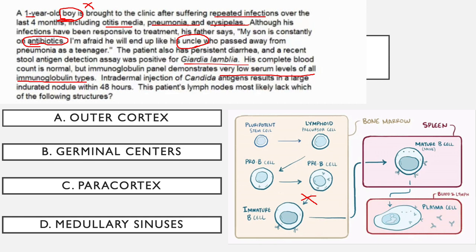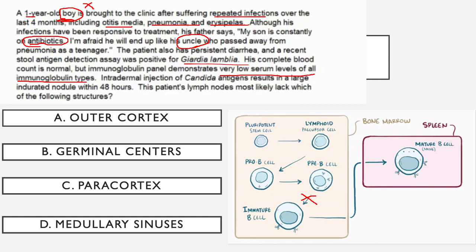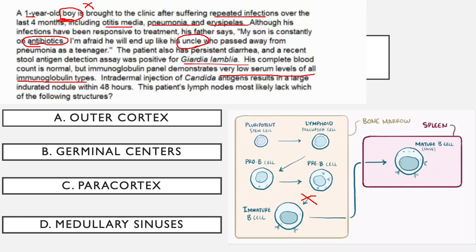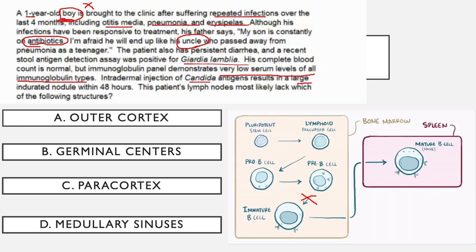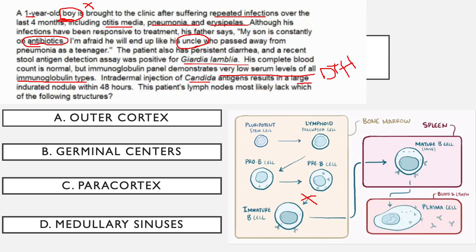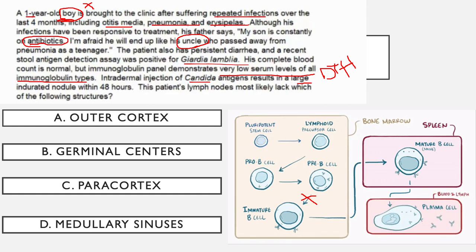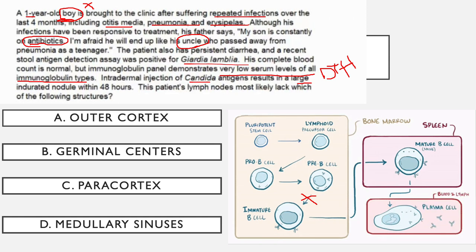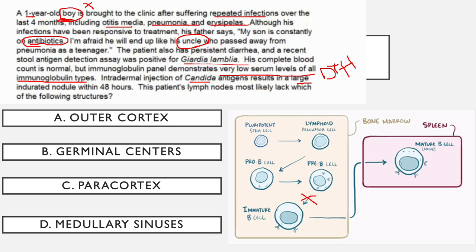Because there are no antibodies, this baby cannot fight bacterial infections. The low serum level applies to all immunoglobulin types because the entire B cell population is gone — not a subset. That's why this baby could not fight off the bacterial infections causing otitis media, pneumonia, and erysipelas, since these are caused by extracellular bacteria that require antibodies. There is a notable statement: an intradermal injection of Candida antigens resulted in a large indurated nodule within 48 hours — a positive delayed-type hypersensitivity reaction, which is T cell mediated.